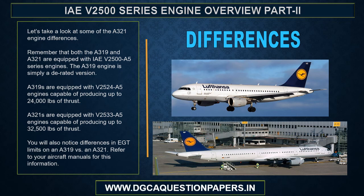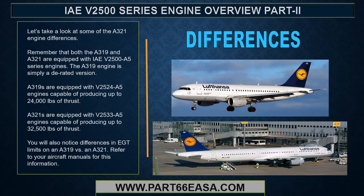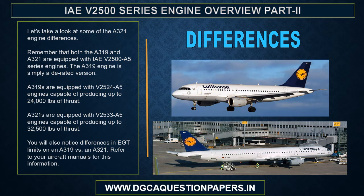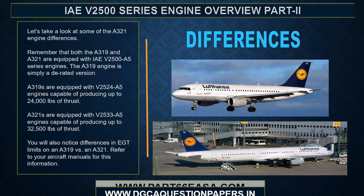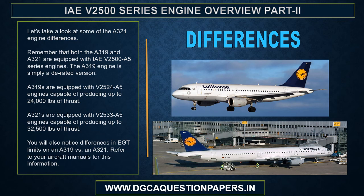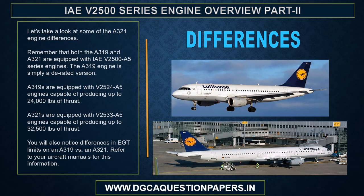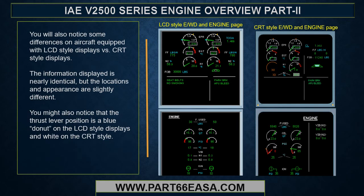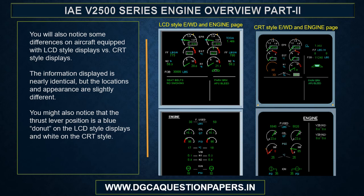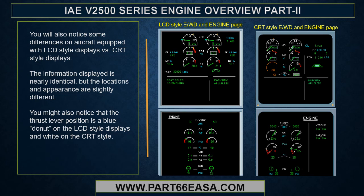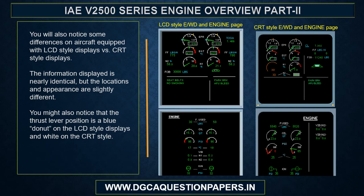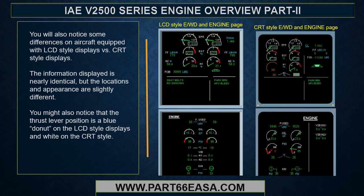Let's take a look at some A321 engine differences. Both the A319 and A321 are equipped with IAE V2500 series engines — the A321 engine is simply a D-rated version. The A319s are equipped with V2524-A5 engines capable of producing up to 24,000 pounds of thrust, while the A321s are equipped with V2533-A5 engines capable of producing up to 32,500 pounds of thrust. You will also notice differences in EGT limits and some differences on aircraft equipped with LCD-style displays versus CRT-style displays.